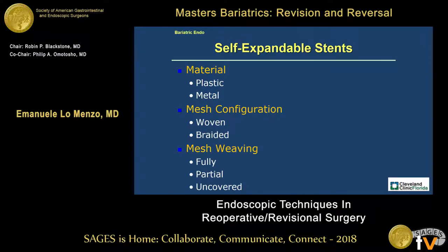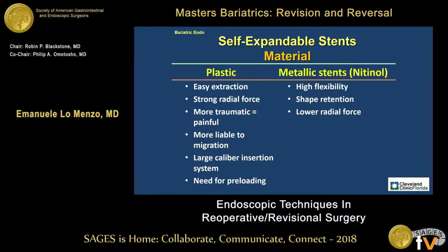Different materials and configurations exist. When it comes to the choice between plastic and metallic stents for bariatric surgery, metallic stents are really the only ones that have a role. Plastic stents, for as much as they're easier to extract and have a strong radial force, cause more symptoms and have a much higher likelihood of migration.